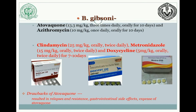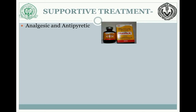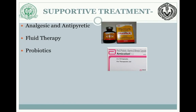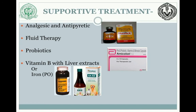Supportive treatment is a crucial part of management. We can use analgesics and antipyretics for abdominal pain and pyrexia respectively, fluid therapy to compensate for dehydration, and probiotics like amoxicillin because the prolonged treatment causes an imbalance of essential flora. Vitamin B and liver extract supplementation help resolve anemia; if not well tolerated, oral iron supplementation can be used. Whole blood transfusion from a healthy donor is also an option.